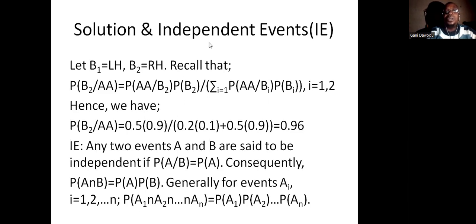After the solution we talked about independent events. Any two events A and B are said to be independent if probability of A given B equals the probability of A. Probability of A given B does not actually give anything different from probability of A. Consequently, probability of A intersection B will now be probability of A times probability of B, multiplication rule. Generally for any events A_i, if probability of A_1 intersection A_2 ... intersection A_n equals probability of A_1 times probability of A_2 ... times probability of A_n, then the multiplication rule is satisfied and the A_i's are independent.